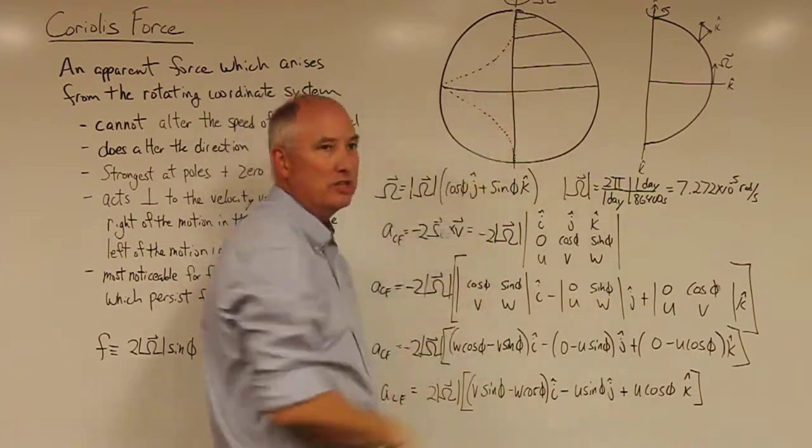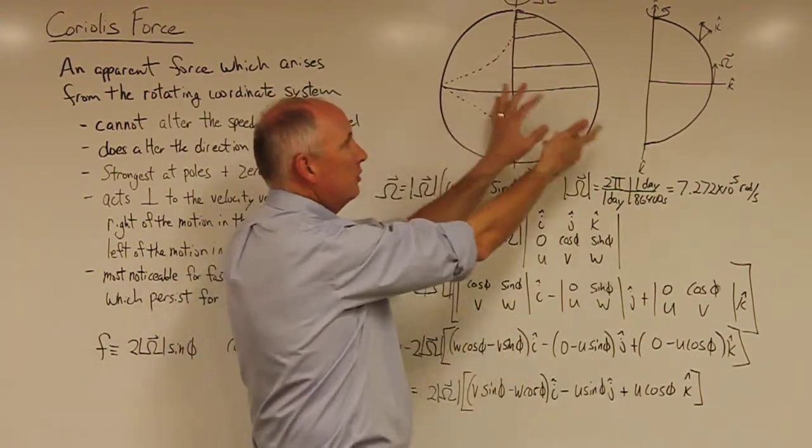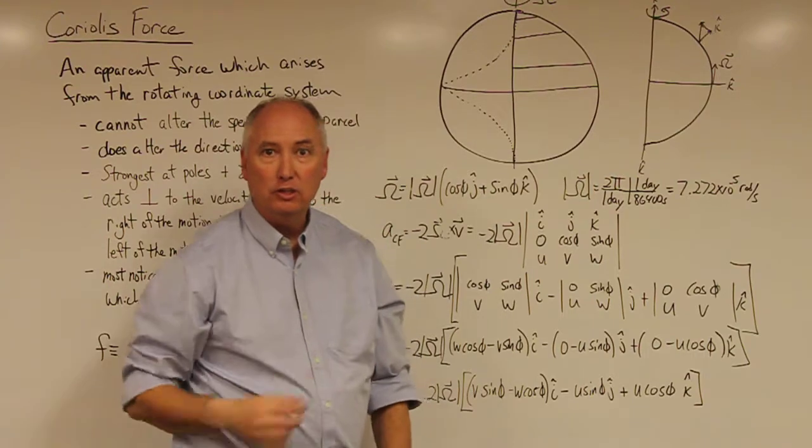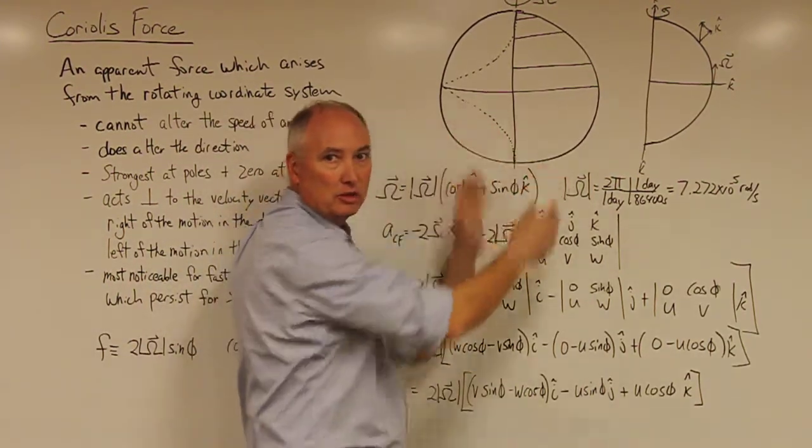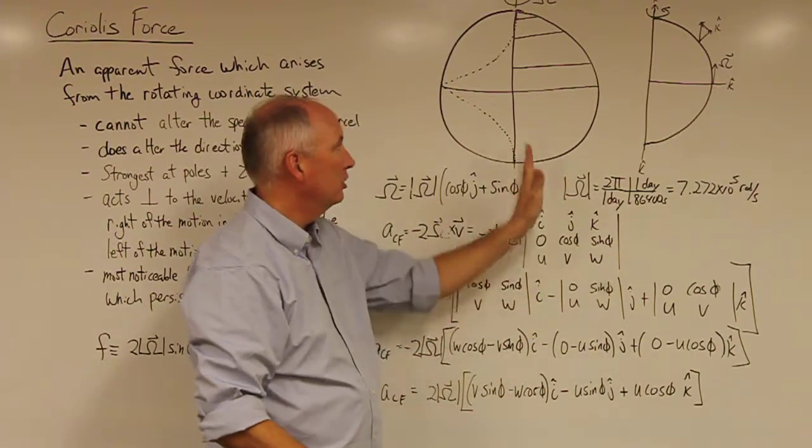And as you move from the north pole towards the equator, the earth rotates underneath, giving an apparent deflection to the right. And if you were to move from the south pole towards the equator, as the earth turns, it would give you an apparent deflection to the left.